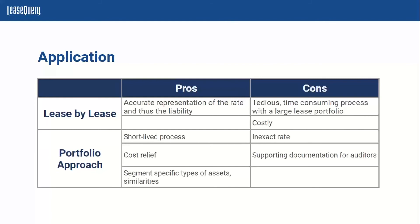Now there are some downsides to either approach. From the lease-by-lease standpoint, it's tedious and time consuming. Even if you're not calculating the implicit rate but using the incremental borrowing rate, it can still be a time-consuming process to assess what an appropriate incremental borrowing rate would be for each asset — and it's pretty costly. If you have 20 or so leases, you may have the time and resources to do it lease by lease, or if you're looking at the materiality of your assets. The portfolio approach downside, however, is that it's an inexact rate — an estimate — so it won't give the most accurate representation of your liability and asset. And because it's an inexact rate, you'll need to document your assessment, how you arrived at the incremental borrowing rate, and how it's applied across your portfolio leases.